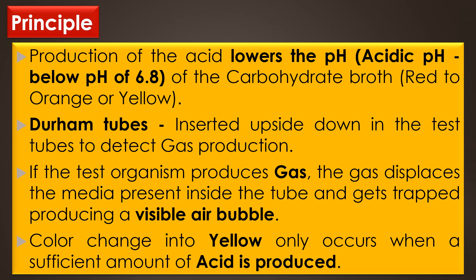A color change to yellow only occurs when a sufficient amount of acid is produced, as bacteria may utilize the peptone producing alkaline byproducts. Based on the characteristic reactions observed, bacteria can be classified as: fermenter with acid production only, fermenter with acid and gas production, and non-fermenters.